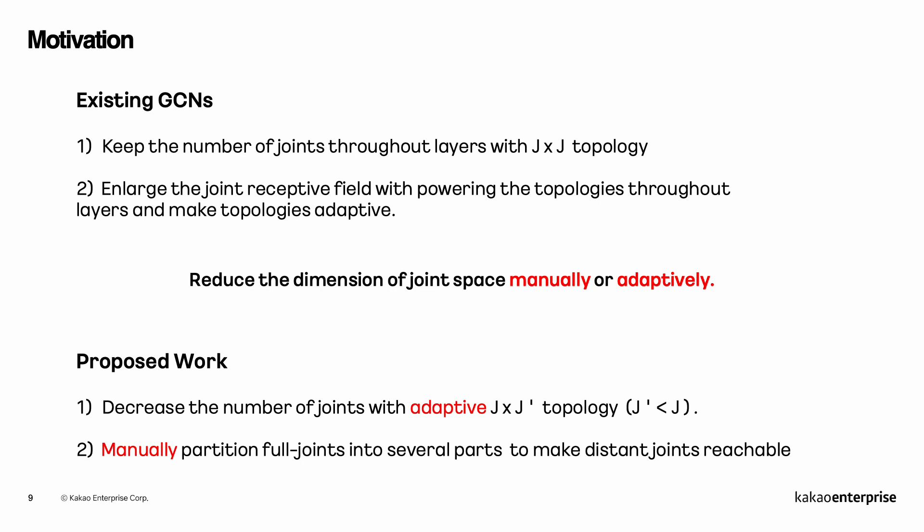In this work, we introduce two types of joint mapping modules for GCN to reduce the number of nodes in the middle of the layers.